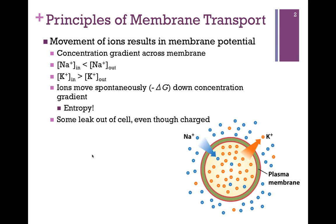If this movement is spontaneous, it means there's a negative change in the Gibbs free energy — this is solely due to entropy. In the case of sodium, the concentration is much higher outside the cell, so if we open the door and allow it to flow either way, it will move spontaneously inside the cell because that gives it more freedom of movement. There are fewer sodium molecules inside, so it has more freedom of movement. In the case of potassium, if we open the door, it will move spontaneously outside the cell — again, that's with its concentration gradient.